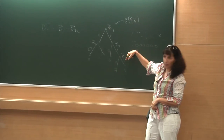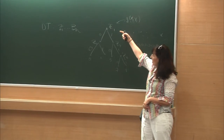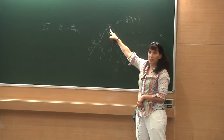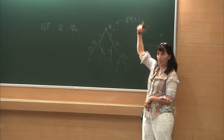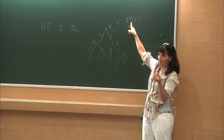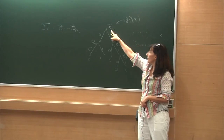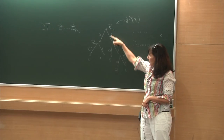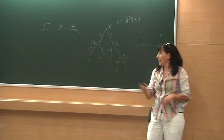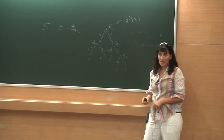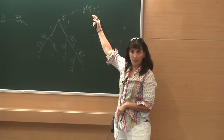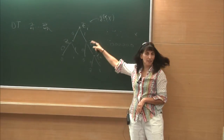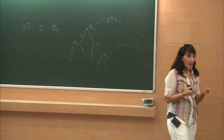The theorem they proved is that, no matter what f is, the decision tree complexity of f times order log n equals the communication complexity of the lifted problem, up to constants. The easy direction: if you have a decision tree for f, you can simulate it to get a protocol — each query to a variable zᵢ means the players compute g on xᵢ and yᵢ by Alice sending her order log n bits to Bob. The hard direction is showing that any arbitrary communication protocol for the lifted function, which might have nothing to do with the decision tree, can be used to extract a decision tree for the outer function.